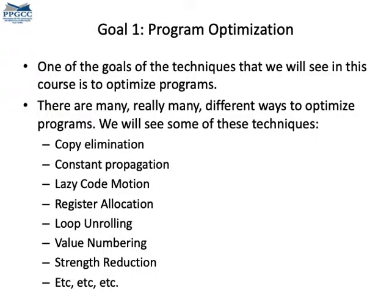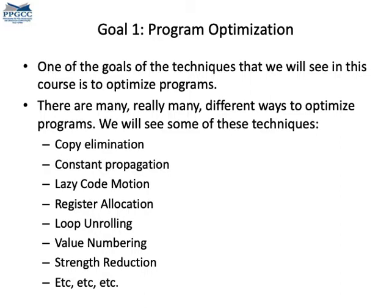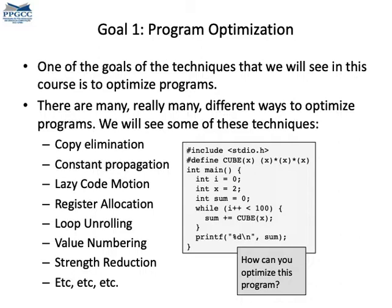About the first goal, we will see a lot of different compiler optimizations. I have listed some of them here, but there are many more. For some programs, compiler optimizations can be very effective. For instance, take a look at this program — you can stop the video to read it. What do you think? Can a C compiler like Clang or GCC resolve it entirely at compilation time? Well, any of these two compilers will transform this program into a single statement that prints the constant 800. You can see the assembly in the box on the right side of the figure. That's pretty nice, isn't it?